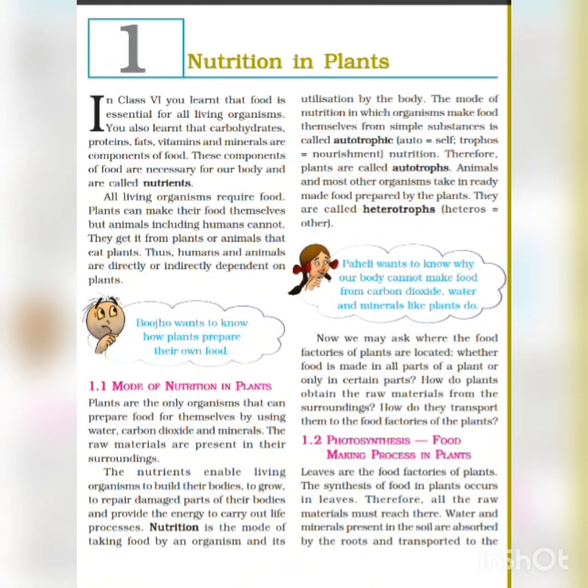Hello everyone, today I am going to explain subject science for class 7. The name of the chapter is Nutrition in Plants. What is nutrition? First of all, food gives us the energy to carry out the basic activity of life. This process by which an organism procures food is called nutrition.